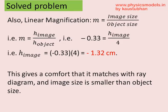Now, we want to get the height of the image. The magnification is nothing but image size by object size, that's height of image by height of object in general. So minus 0.33 is equal to height of image by 4. Therefore, the height of image works out as minus 1.32 centimeters.